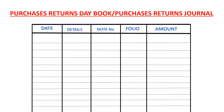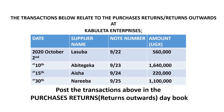When you debit the supplier's account, you accompany that with a document called the debit note, which informs the supplier that their account has been reduced by a certain amount. The debit note is therefore our source document when dealing with purchases returns. That is why you can see a column for note number in the journal — that is where we record the source document number. The worked example here relates to purchases returns at Kabuleta Enterprises.